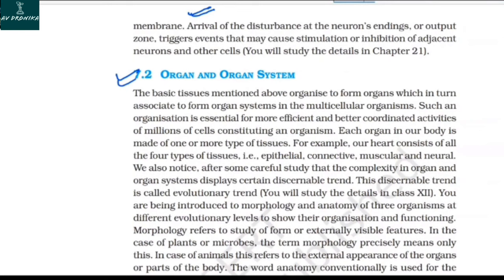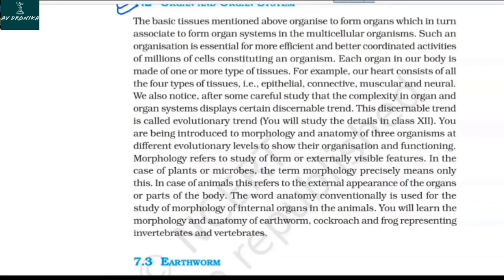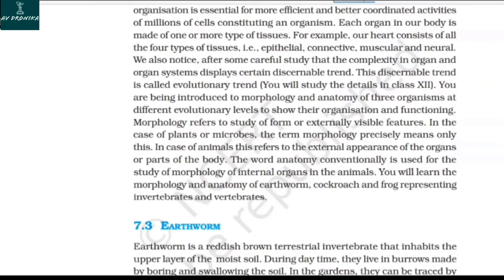7.2 Organ and Organ System. The basic tissues organize to form organs, which in turn associate to form organ systems in multicellular organisms. This organization is essential for more efficient and better coordinated activities. Each organ in our body is made of one or more types of tissues; for example, our heart consists of all four tissue types: epithelial, connective, muscular, and neural. The complexity in organ and organ system displays an evolutionary trend. Morphology refers to the study of external features, while anatomy refers to the study of internal organs in animals. We will study the morphology and anatomy of earthworm, cockroach, and frog, representing invertebrates and vertebrates.